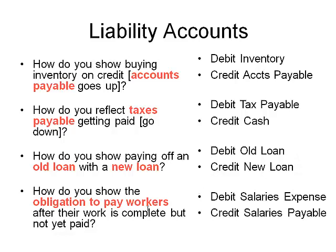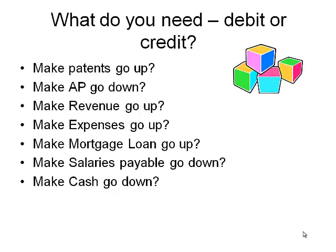How do you show the obligation to pay workers after their work is complete but not yet paid? That means you have salaries expense for the effort — the expense goes up, so that's a debit. And you have salaries payable because you owe them — the liability goes up, so that's a credit. Now freeze the frame and try the next set on your own, then unfreeze and check it.